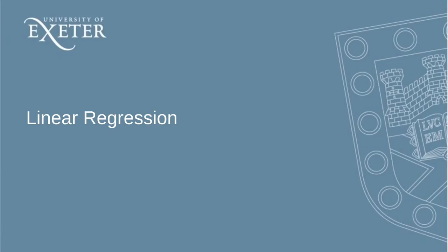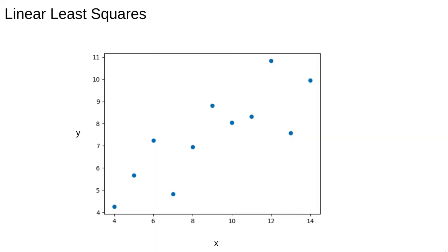Now we're going to talk about how to do the simplest kind of model fitting, linear regression. We start with data that's approximately linear, and our aim is to find the line, that is the coefficients m and c defining the slope and intercept, that is the best description of all the data points.